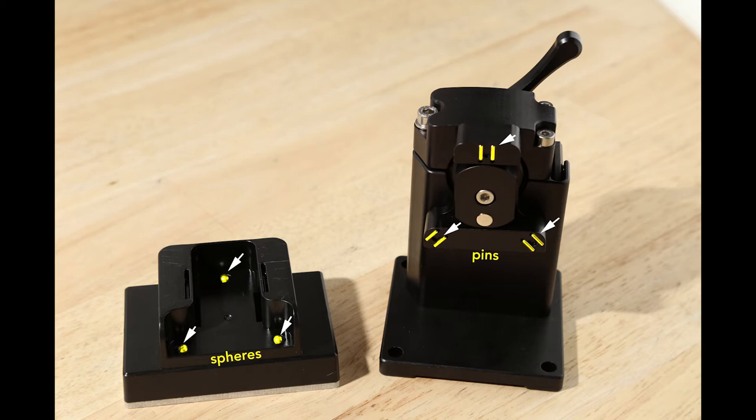Together they form a kinematic coupling. This coupling ensures that the build head seats on the build arm with very little wiggle. This is useful for accurate and repeatable positioning of prints.